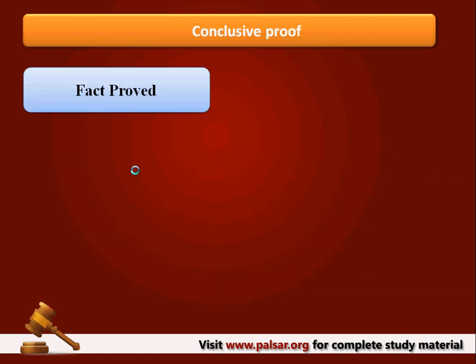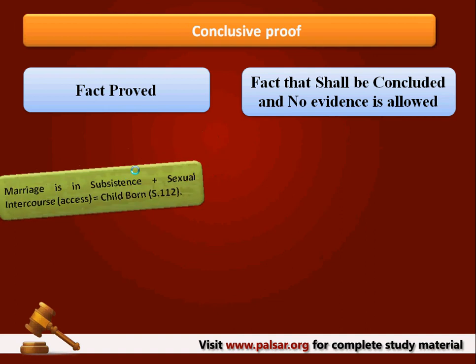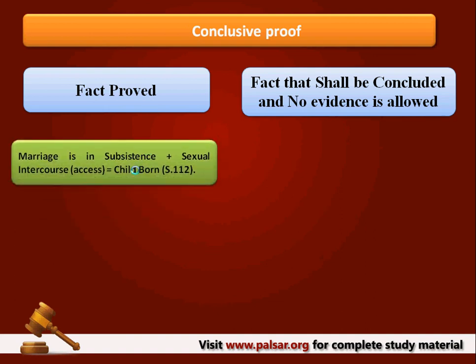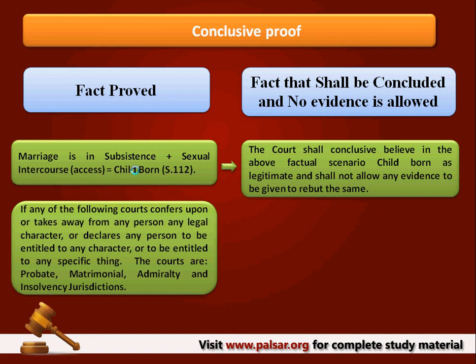Now turning to Conclusive Proof: under Conclusive Proof, if one fact is proved, the court has no scope to even allow the opposite party to dispute that conclusion. The court shall necessarily jump to that conclusion and act upon it, and it shall not allow any party to give any evidence whatsoever. One example: a marriage has occurred and is in existence — if there is sexual intercourse, the child is a legitimate child, and the court shall not allow any evidence to be given whatsoever. Also, Section 40 of the Evidence Act says that if any court — like probate, matrimonial, or insolvency — declares or takes away the right or character of any person, no other evidence shall be allowed to dispute that conclusion.